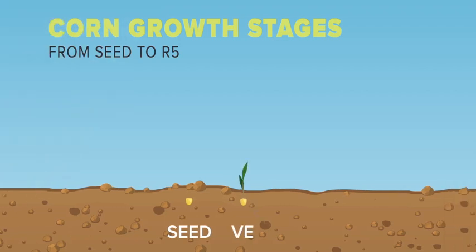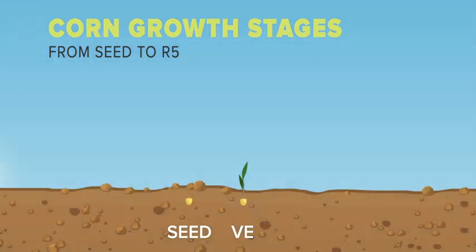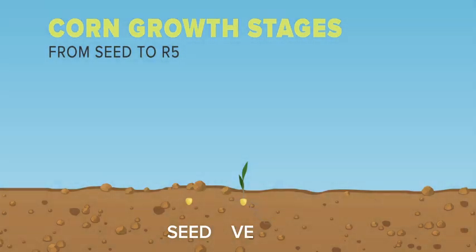Normally, corn requires approximately 100 to 120 GDUs to emerge, which under favorable conditions can be four to five days after planting. Delayed emergence may be a result of leafing out as a result of soil crusting or extremely cold soil temperatures.